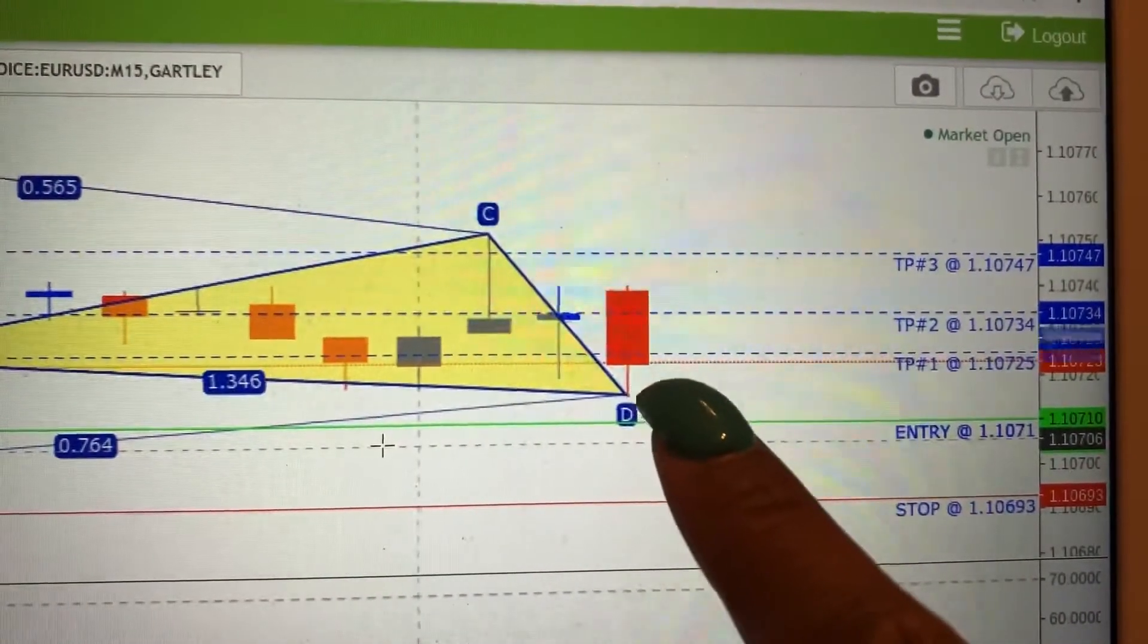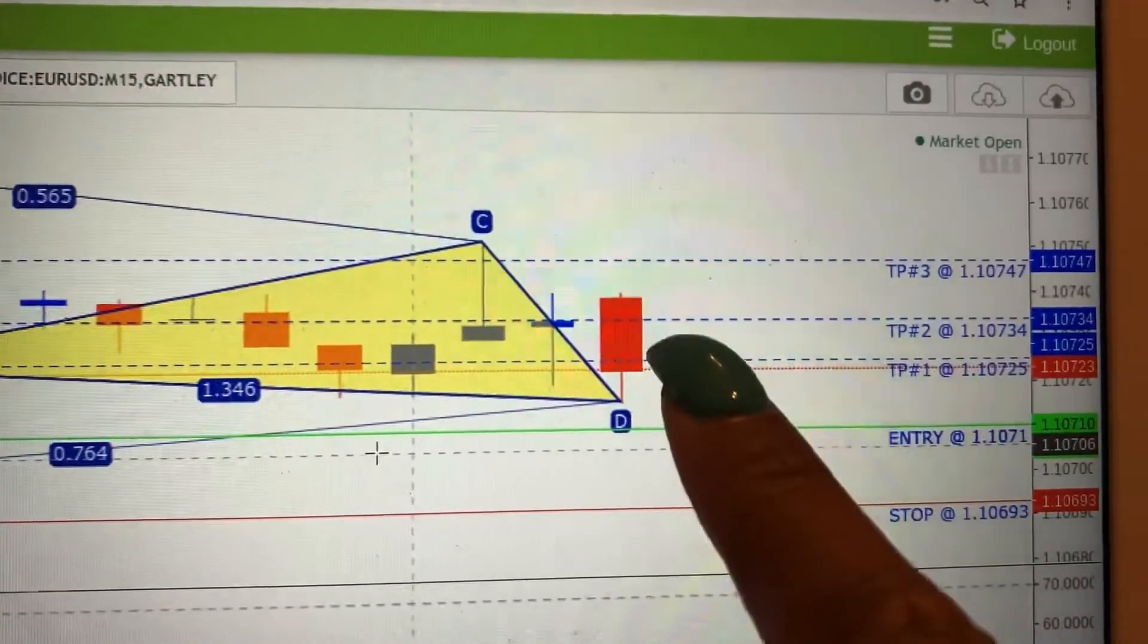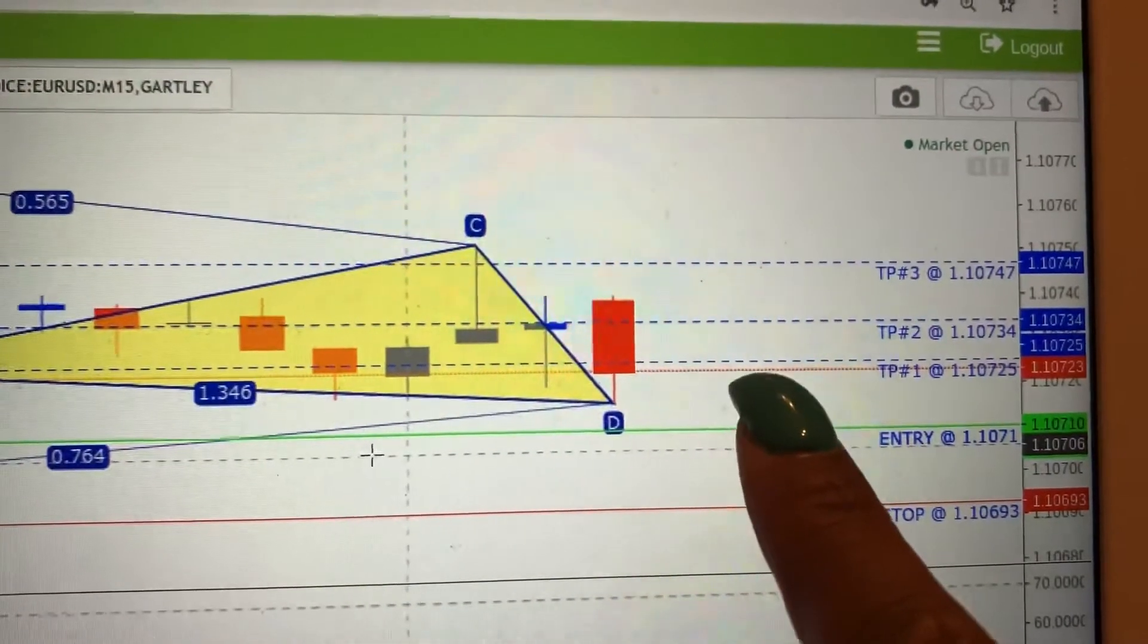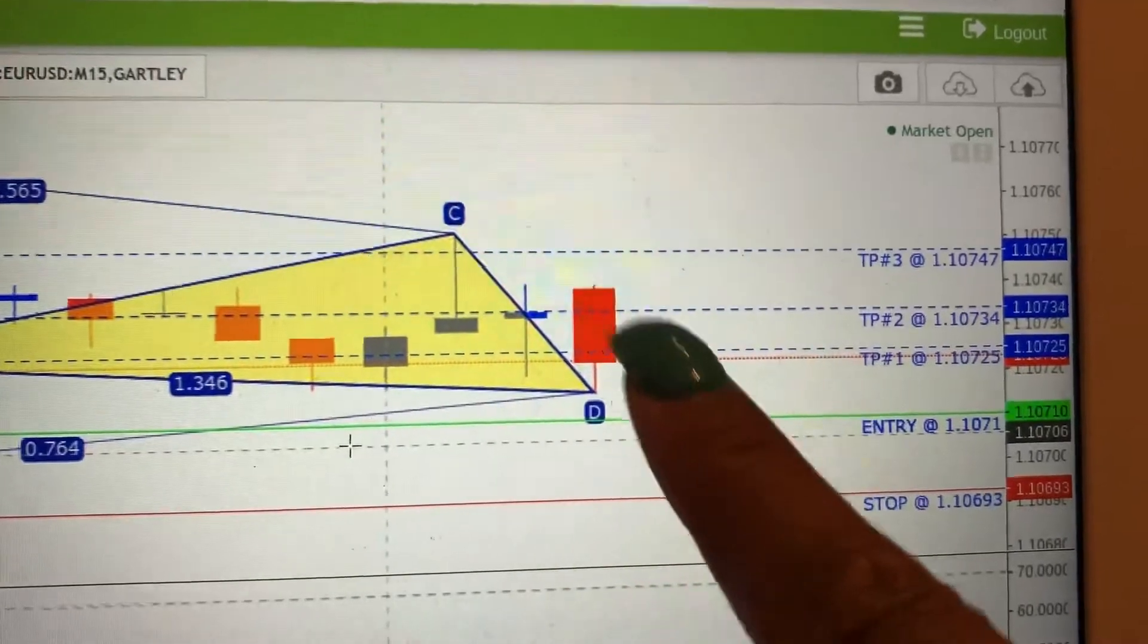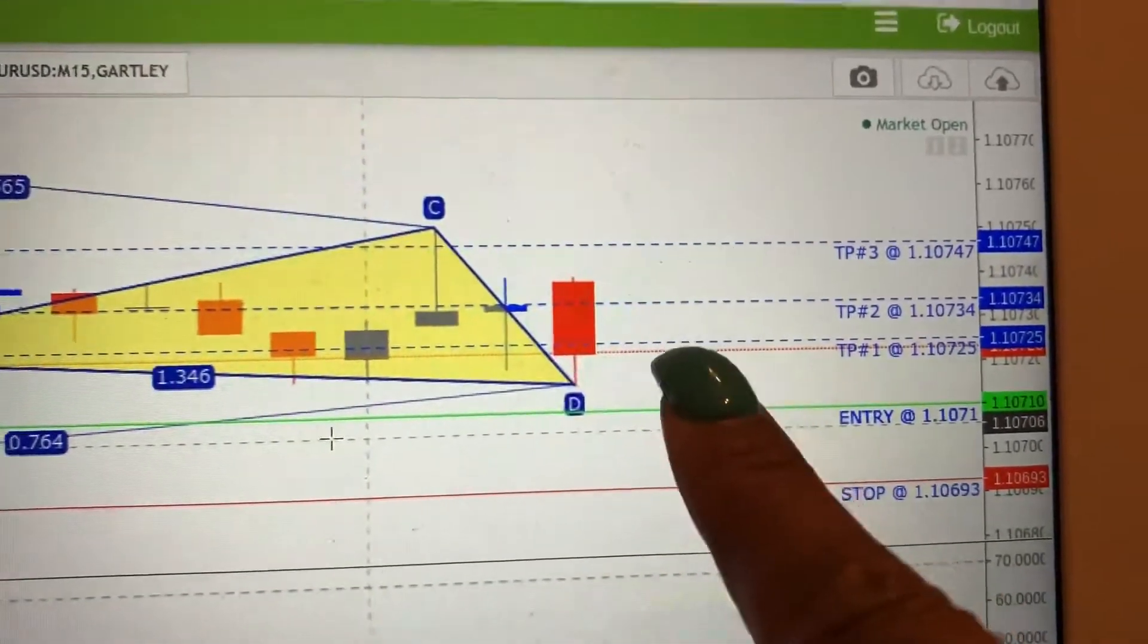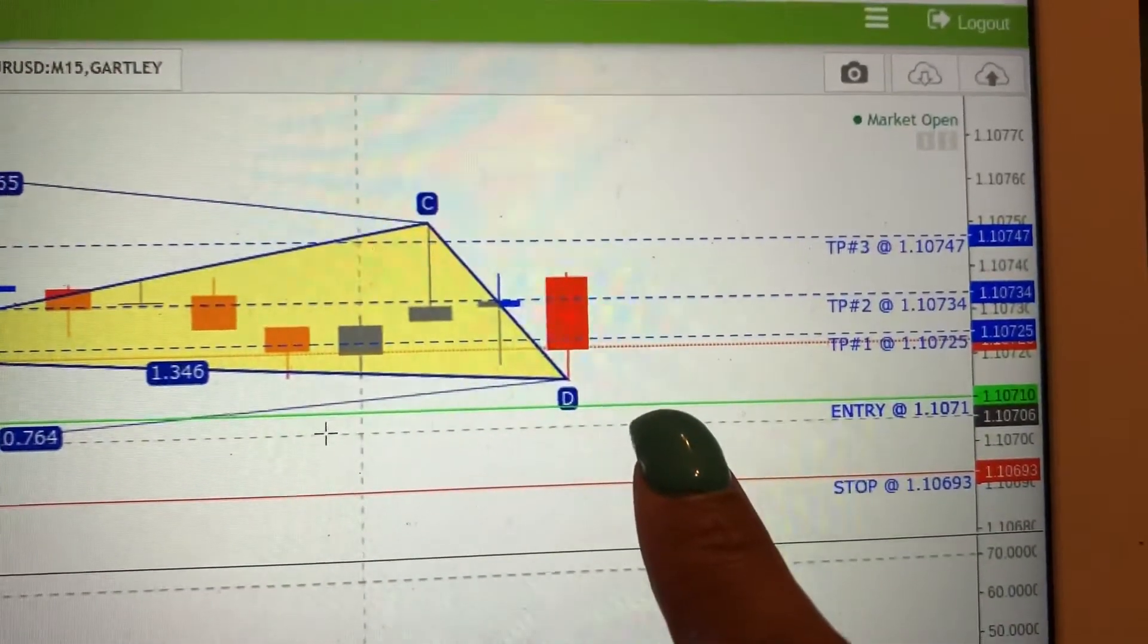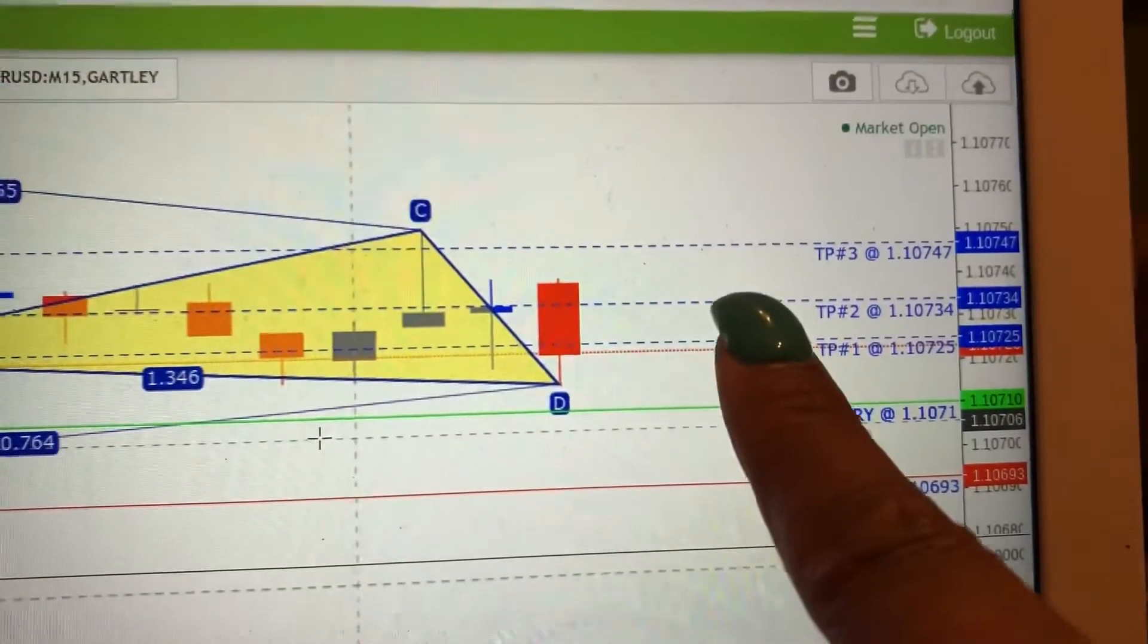So, what we want next is we want to enter this trade when the next candlestick or the next few candlesticks start coming down. Red means it's a sale. Blue means the market is going up. So, we want to see some more red candlesticks come down, hit our entry point, and then do what? Go into a buy and go up.